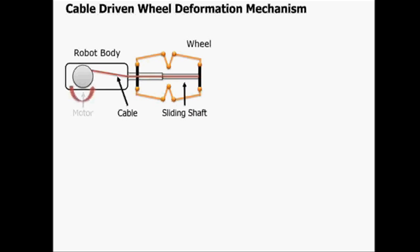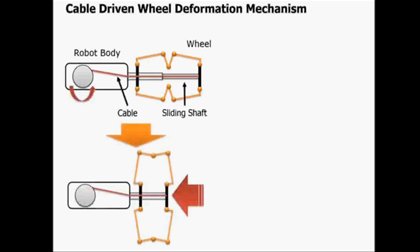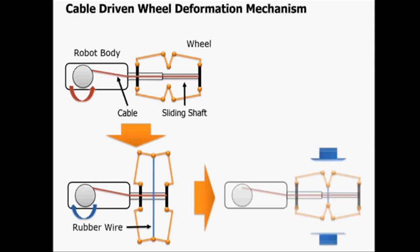When the motor pulls the wire, the wheel diameter becomes larger. And there's a rubber band around the wheel, so when the motor unwinds the wire, the wheel returns to the original shape.